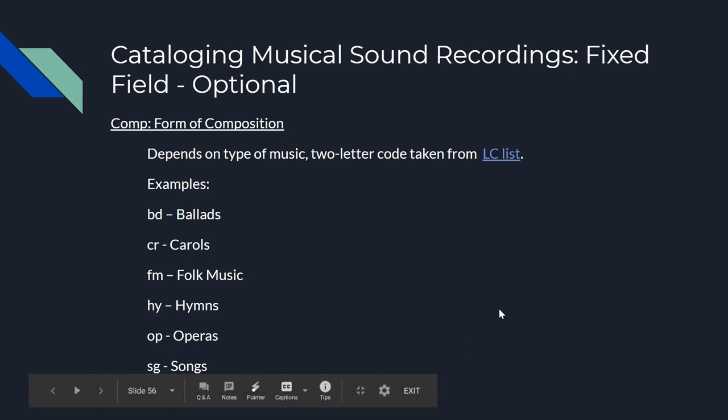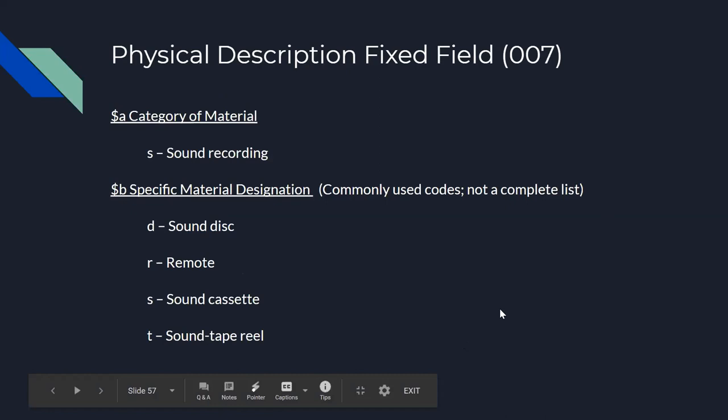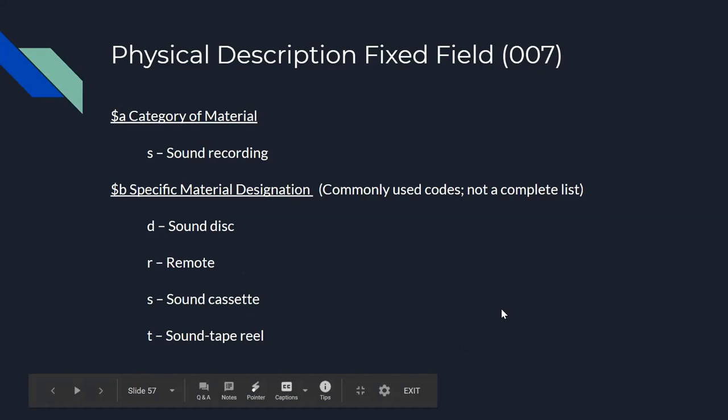Once the fixed field elements have been completed, we can move down to the variable fields starting with the 007. The 007 is used to code the physical characteristics of the sound recordings and are usually broken out by class of physical object to which an item belongs. You will need to create a separate 007 for each class of materials in a collection. We start by entering an S for sound recordings in subfield A, used for both non-musical and musical sound recordings.